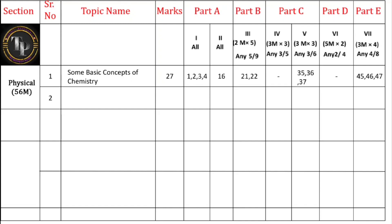All question numbers are written on the blueprint you can see here. The second chapter, Structure of Atom, carries 29 marks weightage for the midterm. It has four MCQs (question numbers 5, 6, 7, 8), one fill in the blank, two two-mark questions, and three three-mark theory questions. The theory questions are numbered 38, 39, and 40 under Part C.